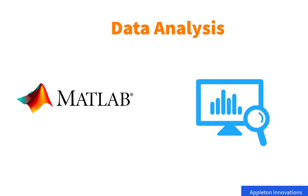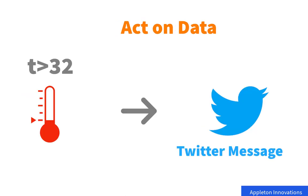ThingSpeak can also be used to act on data. For example, you could send a tweet when the temperature in your garden reaches more than 32 degrees centigrade. So in summary, ThingSpeak is useful to connect, visualize, and analyze sensor data, and also to act on sensor data.